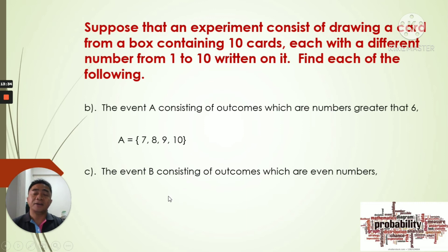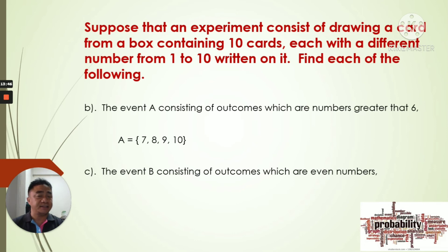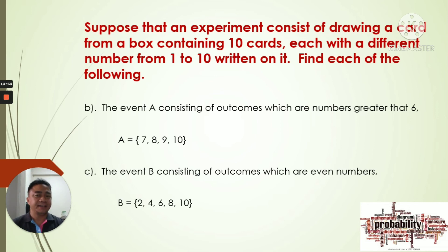We go to question C: the event B consisting of outcomes which are even numbers. The even numbers from our sample space are 2, 4, 6, 8, and 10. So B equals {2, 4, 6, 8, 10}. That's how you write event B consisting of even numbers.